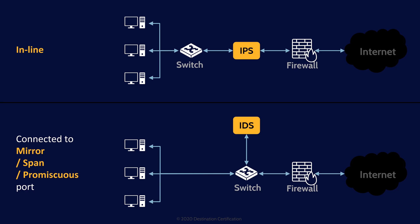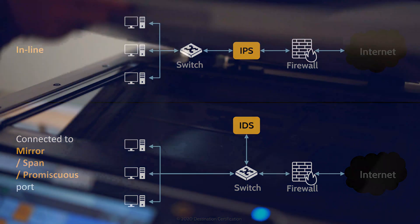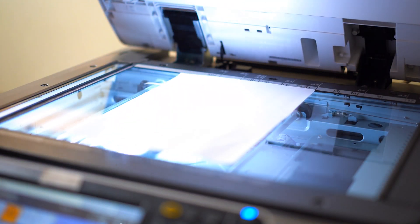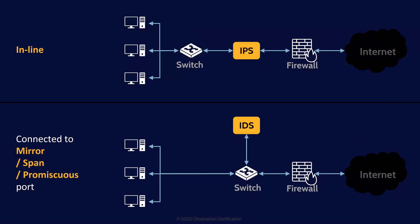The major downside of inline is it is another point of failure. If the inline IDS or IPS system goes down or fails, then all traffic will be blocked, causing a denial of service. The other method is to connect the IDS or IPS to a switch and configure that specific switch port to be a mirror, span, or promiscuous port. By default, a switch only forwards packets to the intended system, so the IDS or IPS wouldn't see most traffic. Setting a port to mirror or promiscuous means all packets going through the switch will be copied and sent to the IDS or IPS so it can monitor everything. It is more common to install an IDS in this configuration.